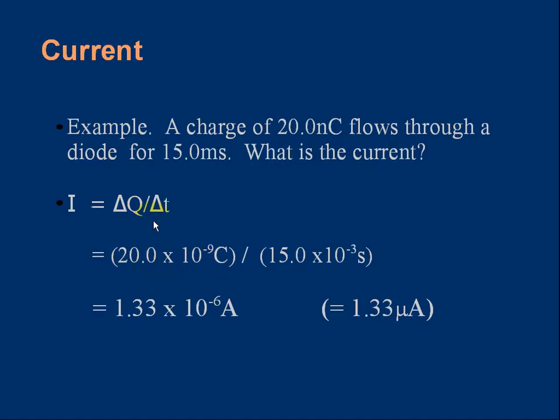Divide that by the time, 15.0 milliseconds. Milli means 10 to the minus 3, a thousandth. So that's the sum we have to do. Give the answer to three significant figures because the data you're provided with, 20.0, 15.0, are given to three significant figures. The answer is 1.33 times 10 to the minus 6 amps. Don't forget the unit. If you want a slightly neater form, note that 10 to the minus 6 is the same as micro. I could say the current is 1.33 microamps.